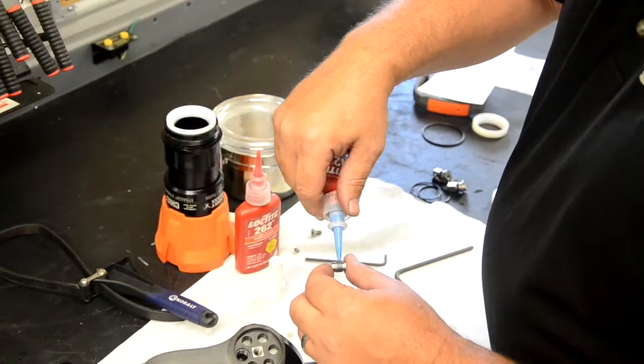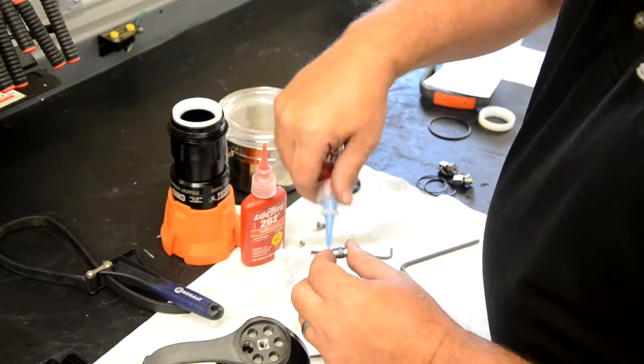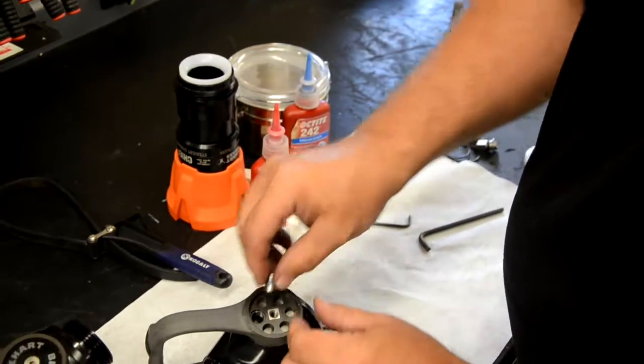After that's finished, check that the bail handle operates smoothly a second time and then place it into the open position.